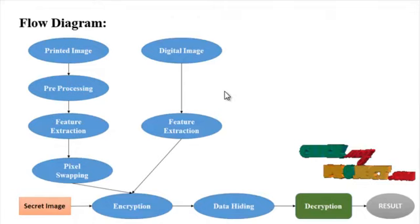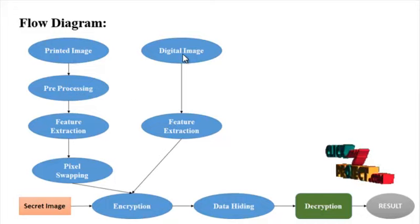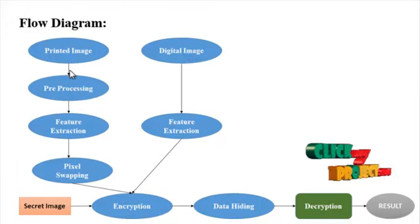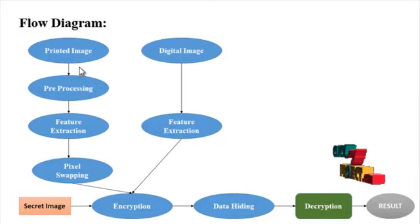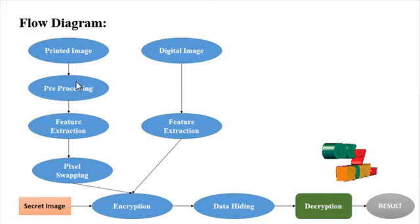Let me discuss the flow diagram for our process. Printed image and digital image are taken as natural shares. In the pre-processing stage of our proposed method, the printed image is pre-processed by cropping the input image. Cropping is performed manually and stored for further processing.